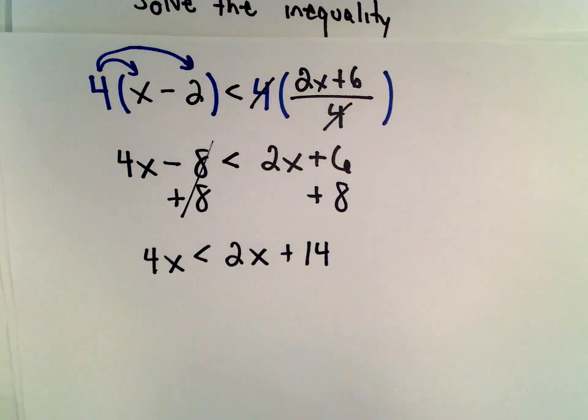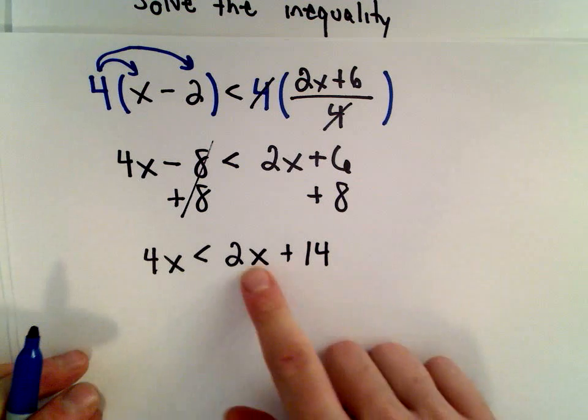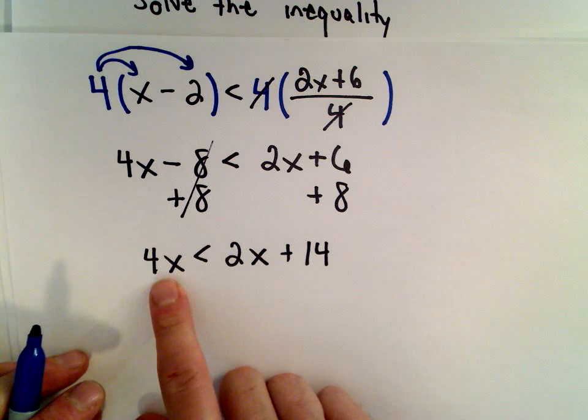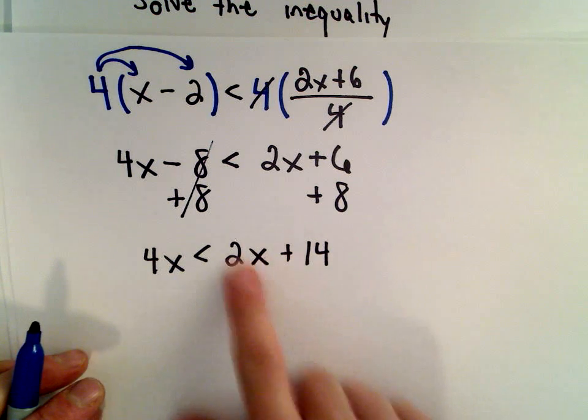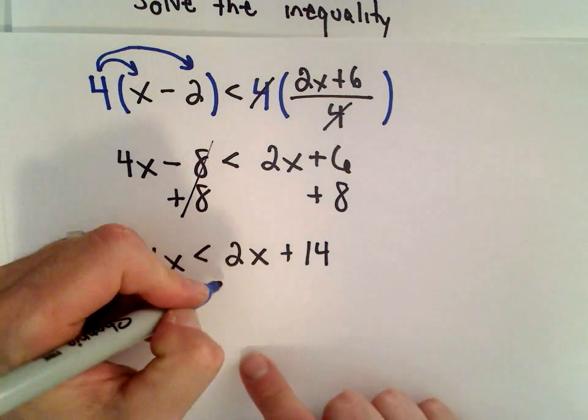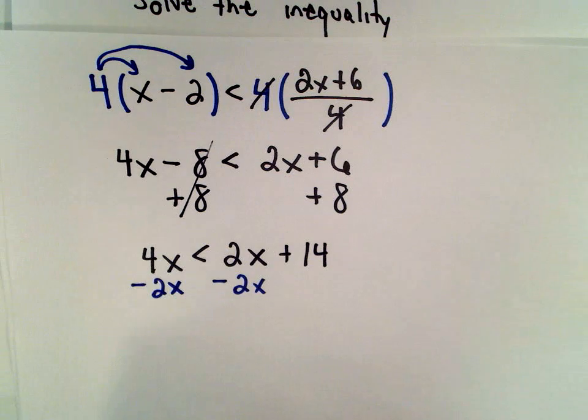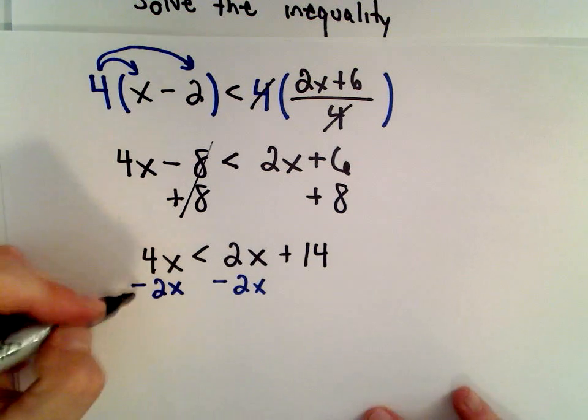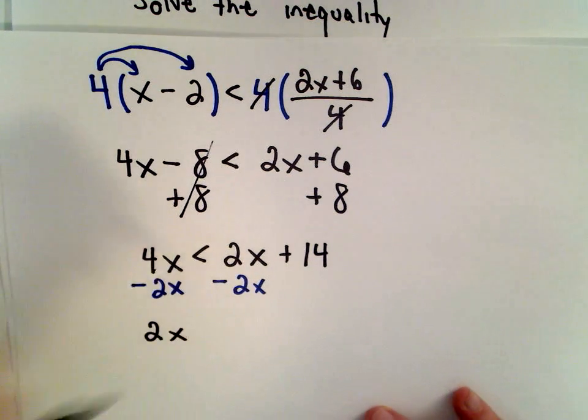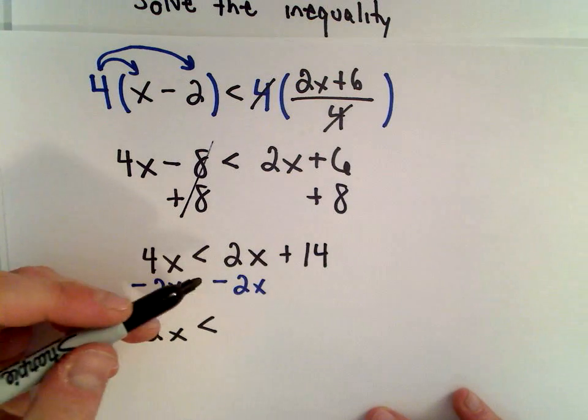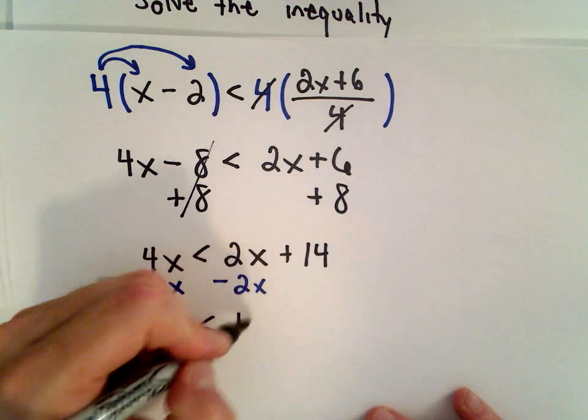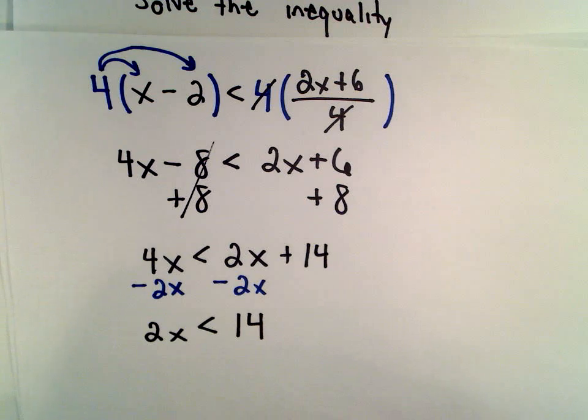Now I want to combine all the terms involving x. I said I'm going to put all the x terms on the left side, so let's move this positive 2x by subtracting 2x from both sides. 4x minus 2x leaves me with 2x. 2x minus 2x is 0x. We still have our positive 14 on the right side.